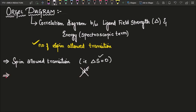The second point about the Orgel diagram is that it is only used for weak field ligands, that is high spin complexes. It can be used for both octahedral as well as tetrahedral, but only for high spin complexes — it is not used for low spin complexes. That is why we have the Tanabe-Sugano diagram, in which we can find transitions for both high spin as well as low spin.